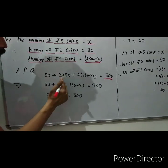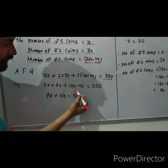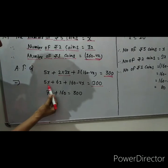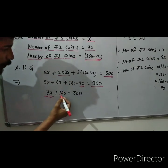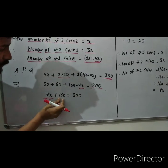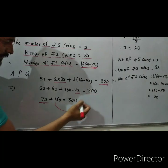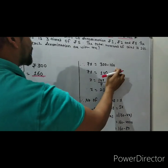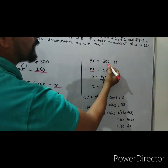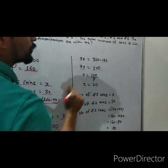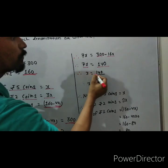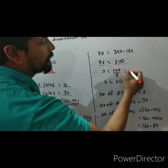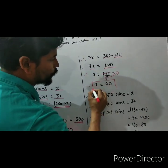Simplifying: 5x plus 6x is 11x, and 11x minus 4x is 7x, plus 160 is equal to 300. Moving 160 to the right hand side: 7x is equal to 300 minus 160 which is 140. Therefore x is equal to 140 divided by 7, which equals 20.